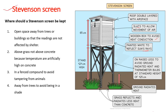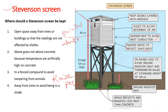The first thing we're looking at is the Stevenson screen and its characteristics. First, it is on raised poles. It is painted white. It is made from wood. It is also slated — that's the way the wood planks are arranged — and it has an open roof.